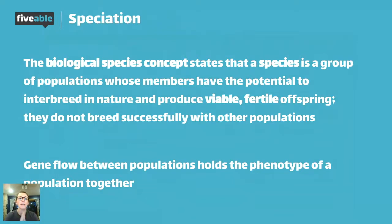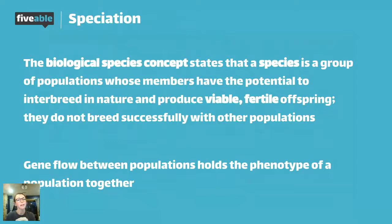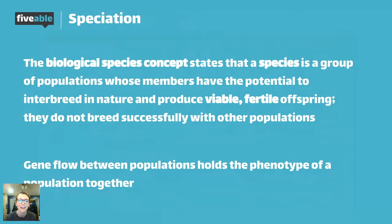The biological species concept defines two organisms as the same species based on whether they can produce viable, fertile offspring. Viable means living — capable of life — and fertile means capable of reproduction. If you can mate with another organism and make babies that are living and capable of reproduction, you are the same species. If two organisms try to mate and are incapable of producing living, fertile offspring, they are not the same species.